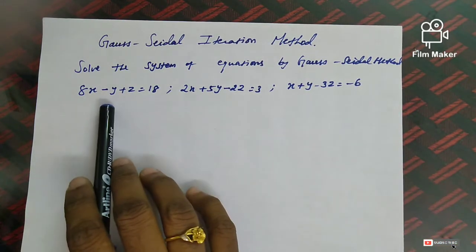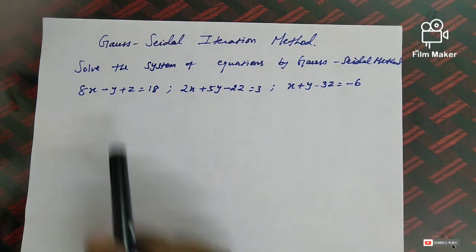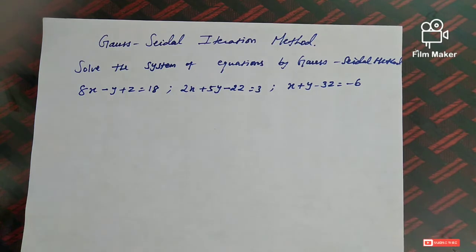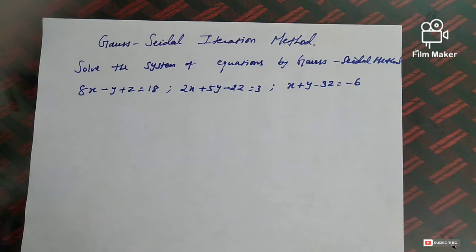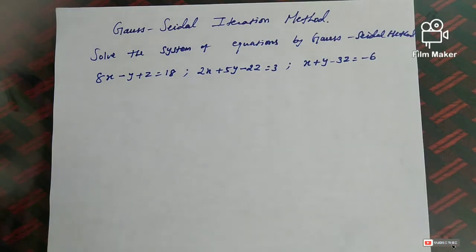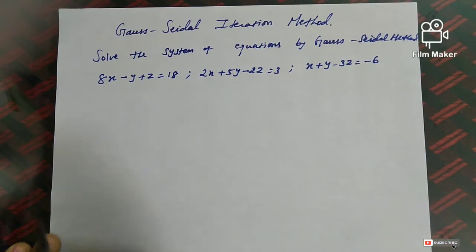The system of equations is: the first equation is 8x minus y plus z equals 18, the second equation is 2x plus 5y minus z equals minus 6, and from the given system we will now look at the solution.